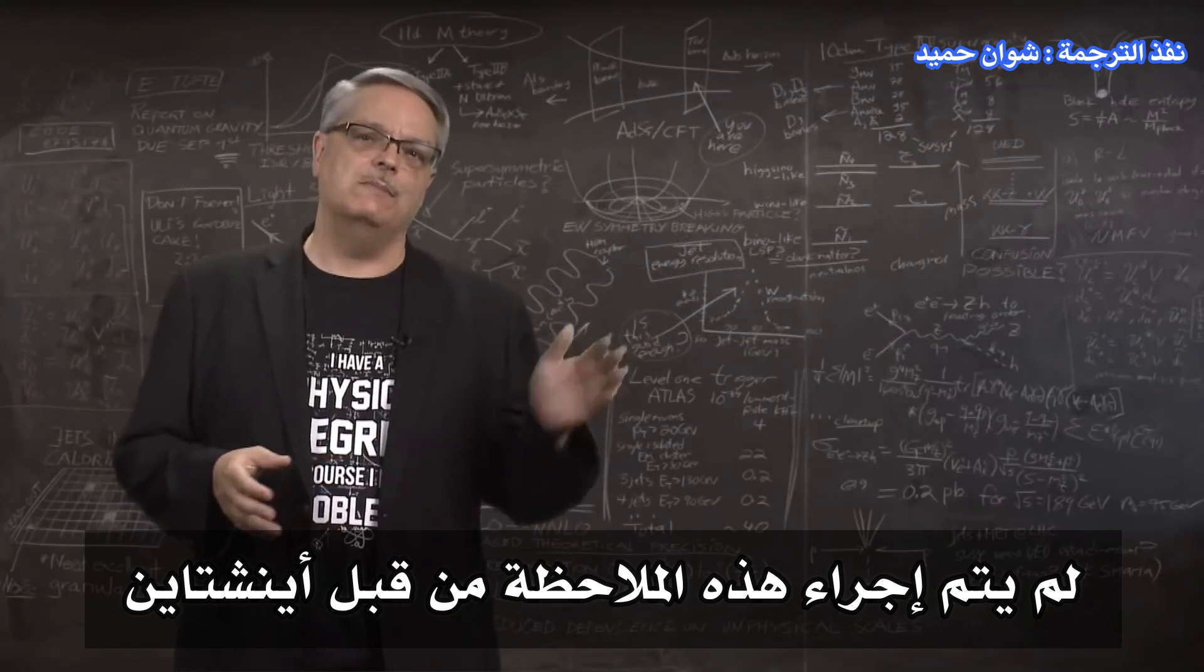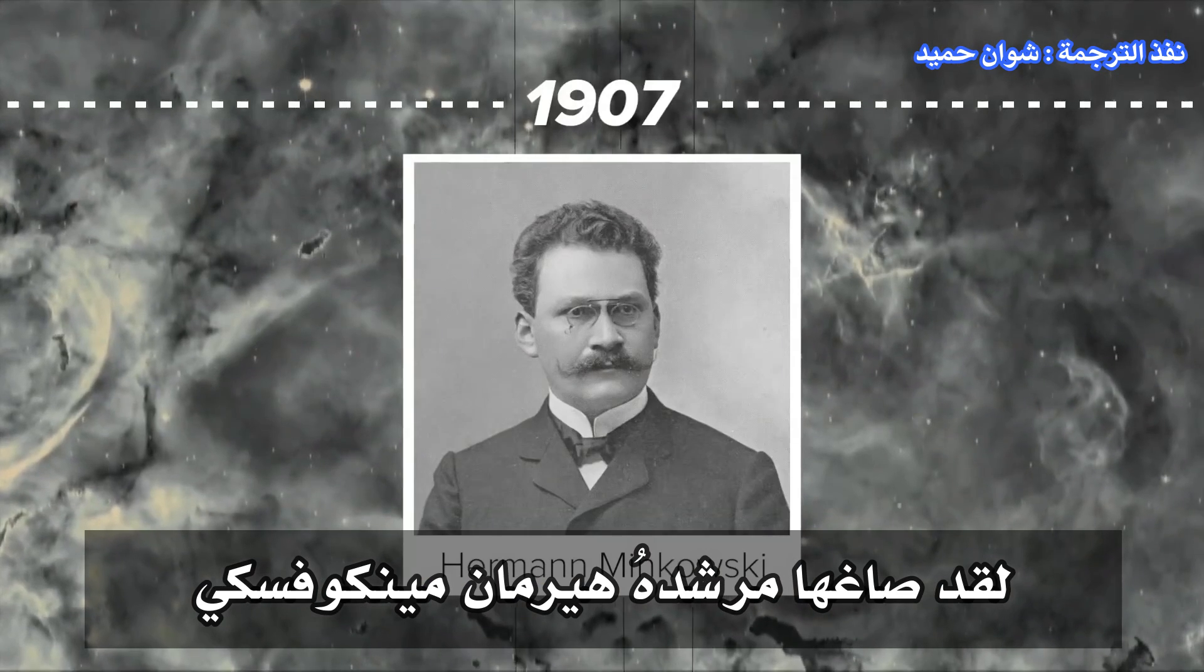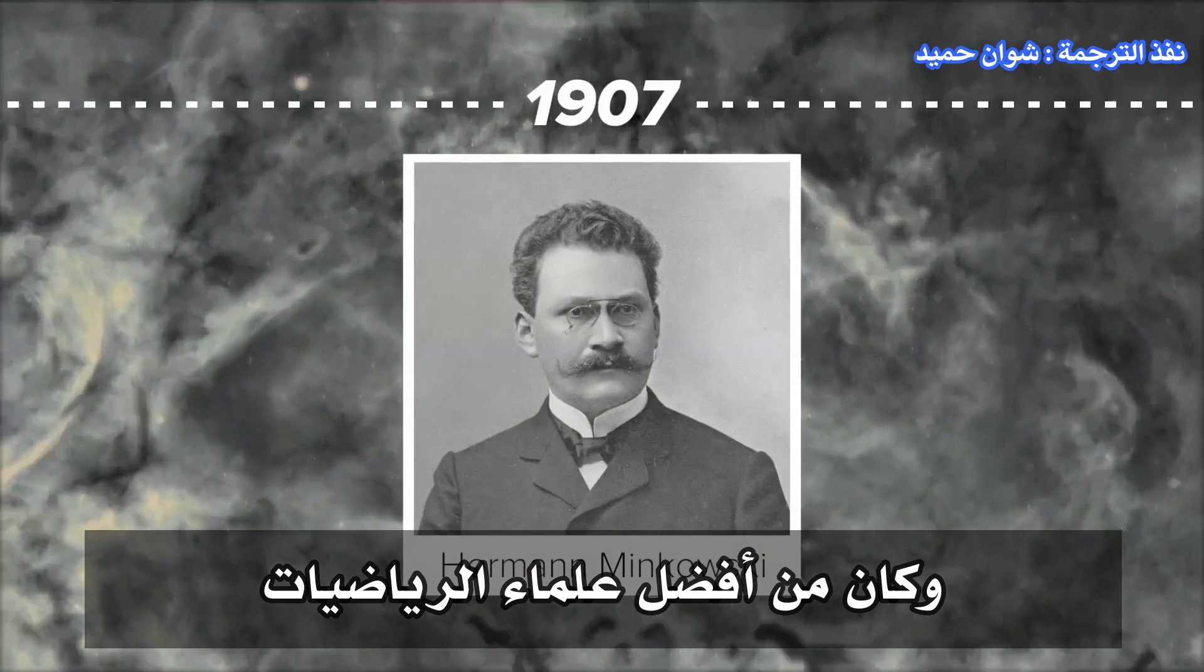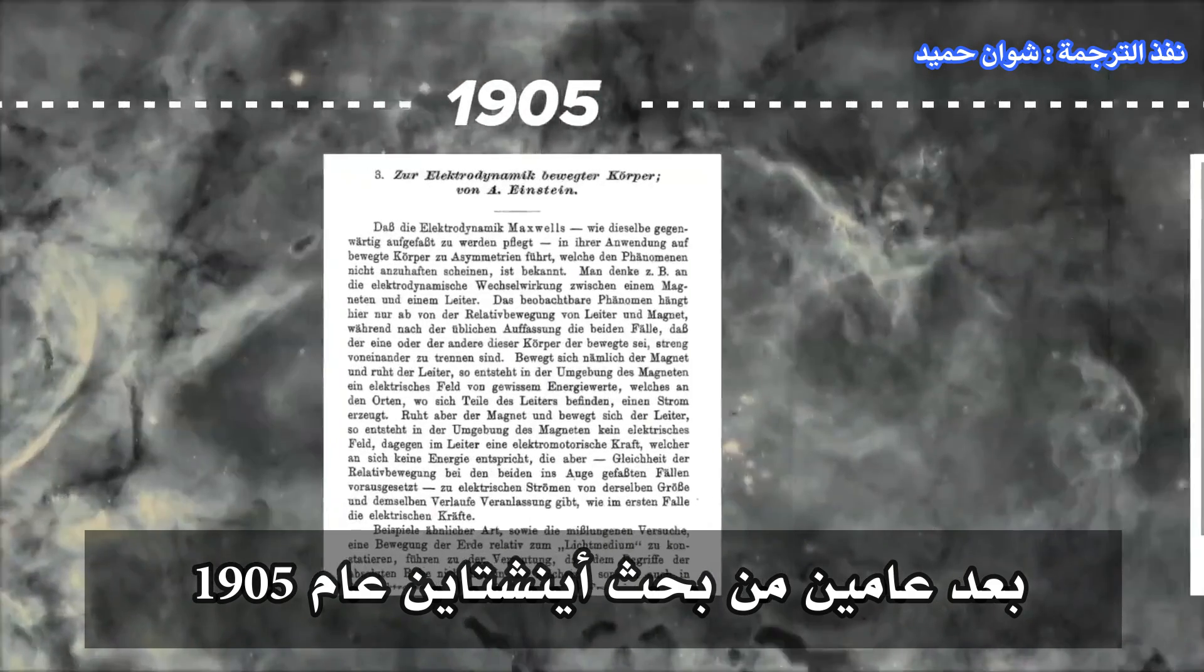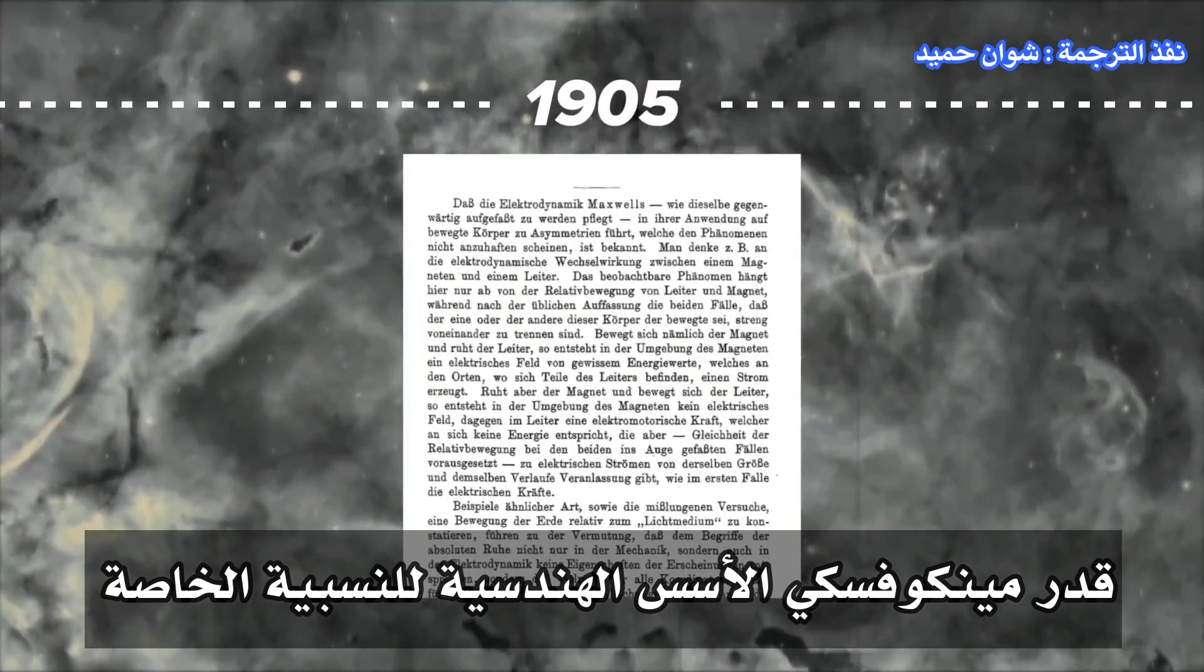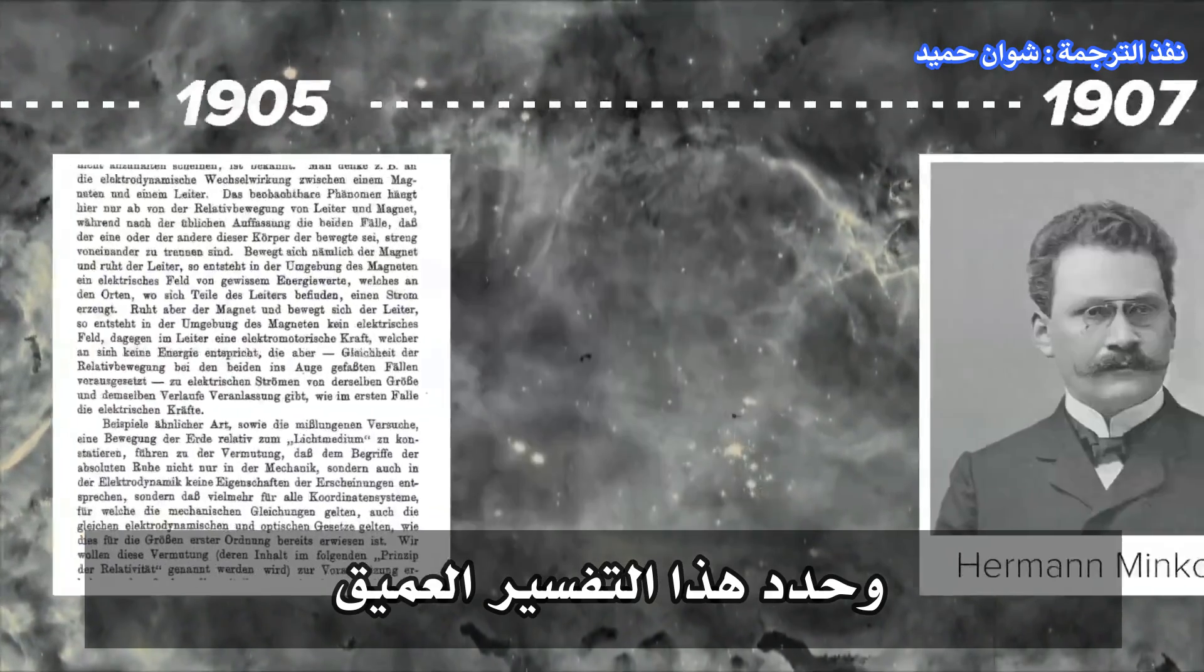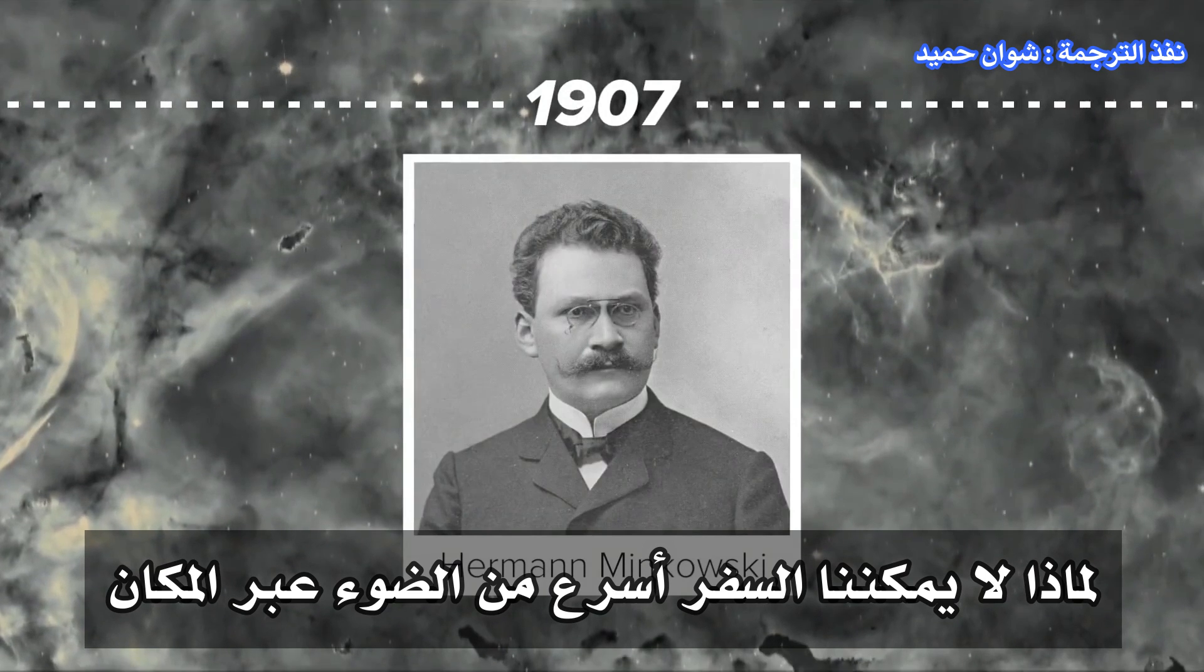This observation wasn't made by Einstein. It was made by his mentor, Hermann Minkowski. Minkowski was one of Einstein's mentors and a better mathematician. Two years after Einstein's seminal 1905 paper, Minkowski appreciated the geometrical underpinnings of special relativity and determined this deep and fundamental explanation why we can't travel faster than light through space.